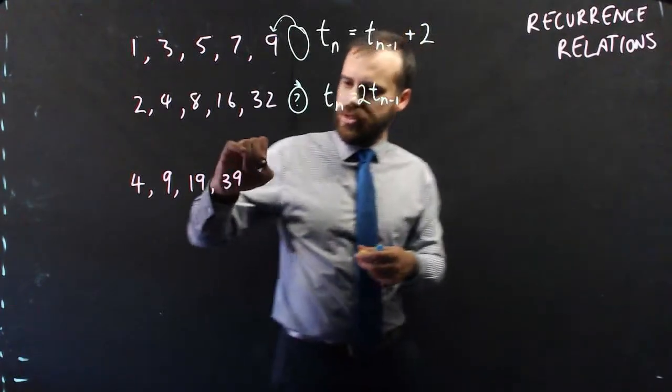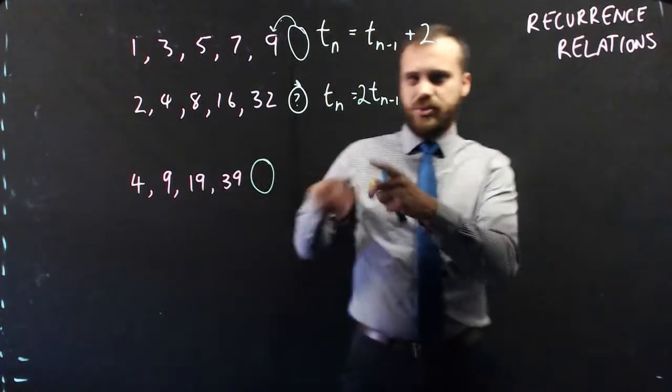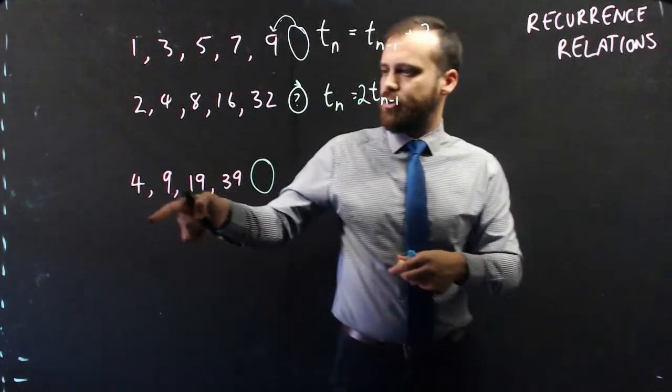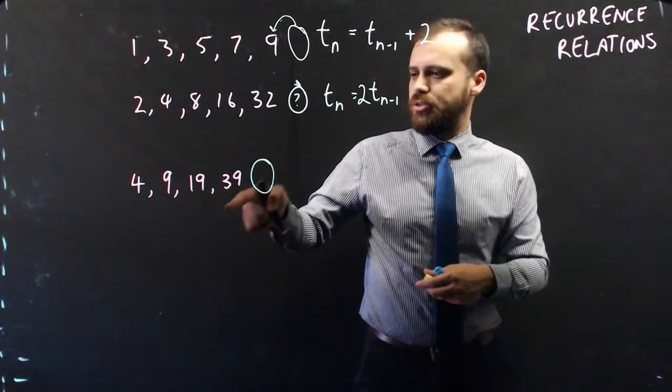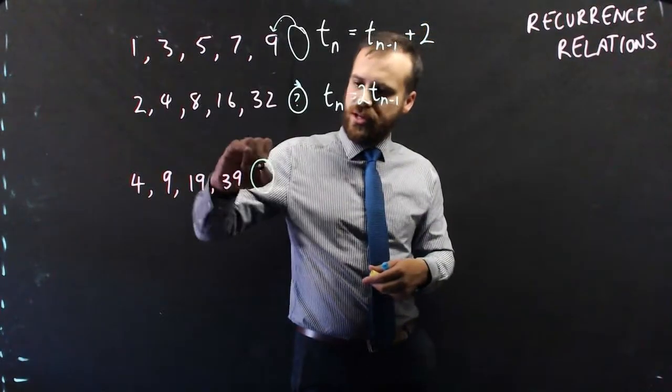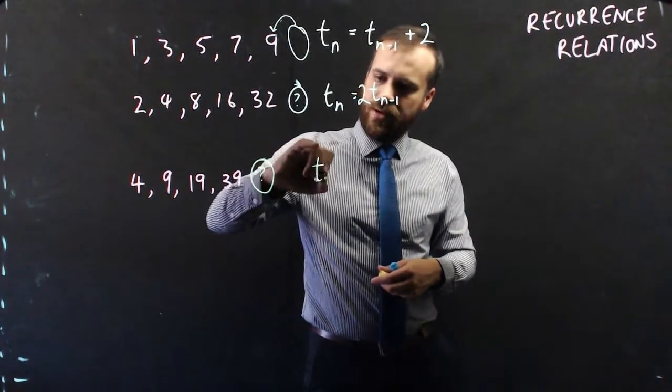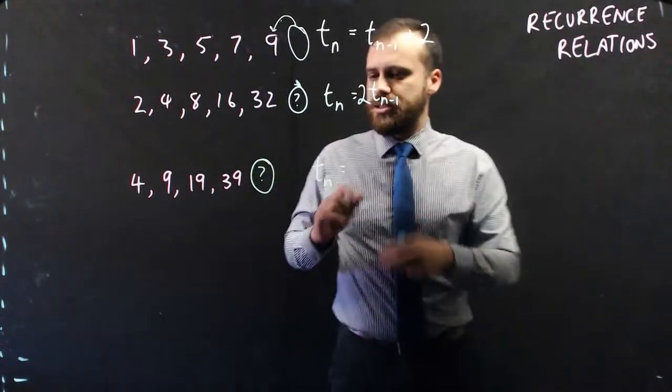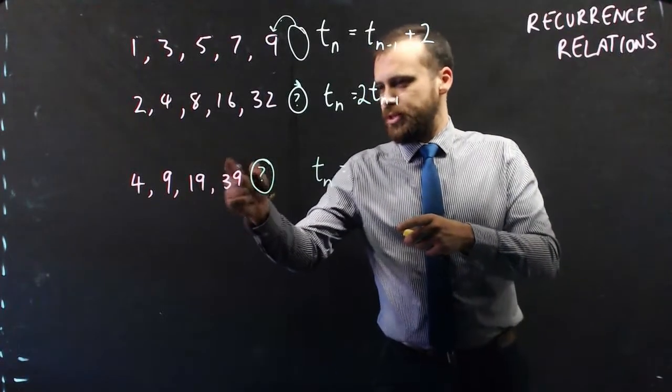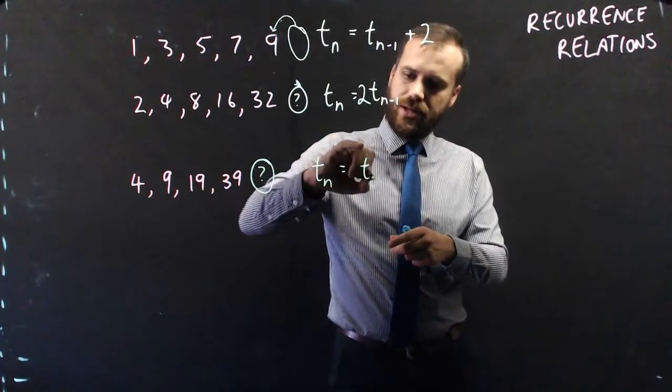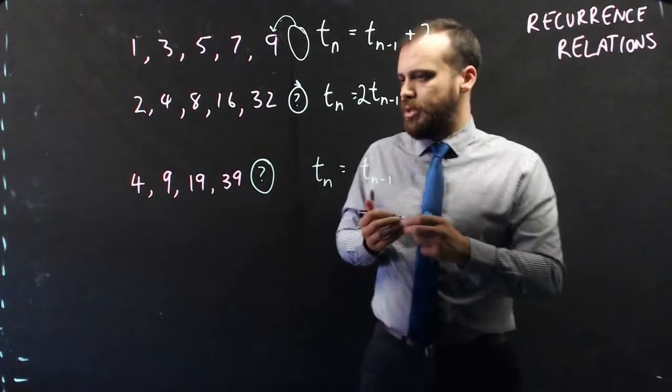And finally, this one here. I tried to make this one a little more complicated. 4, 9, 19, 39. So the next term tn is going to be equal to the previous term tn-1. And what's happening?